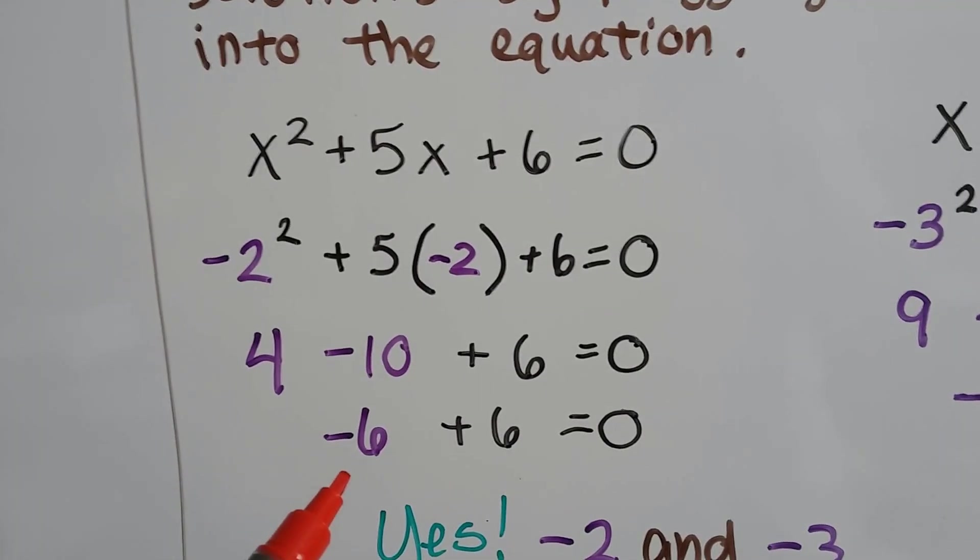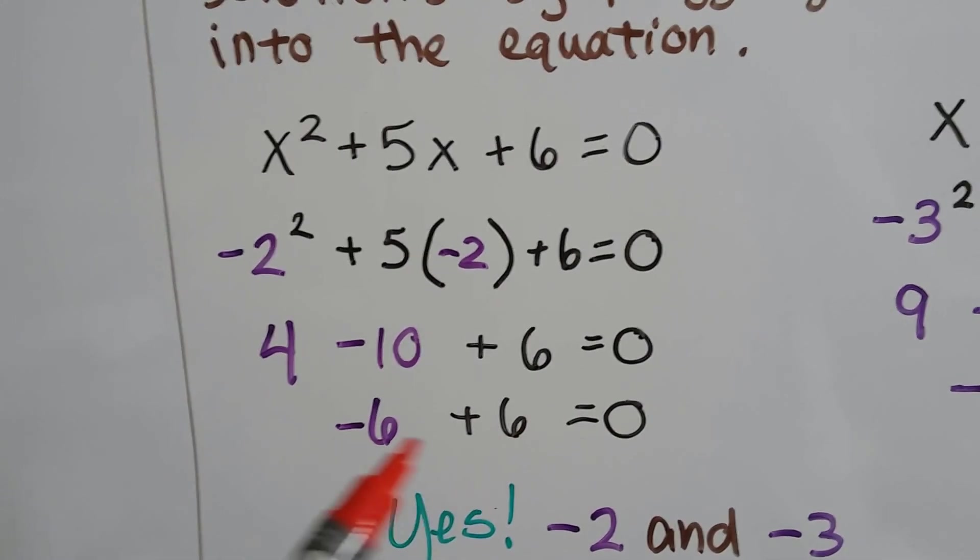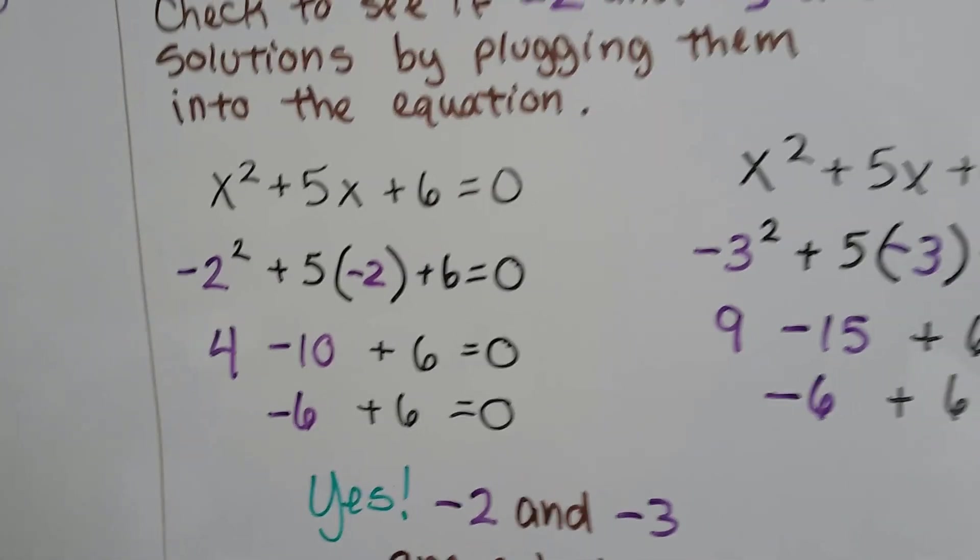4 take away 10, well, that gives us a negative 6, and negative 6 plus 6, that makes a zero pair. It's zero. Yes, so negative 2 works.